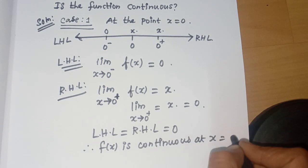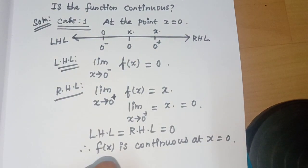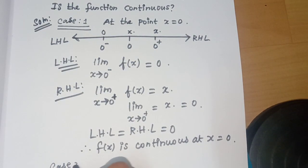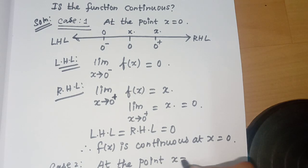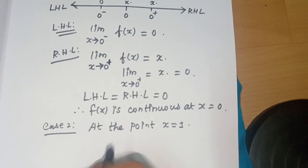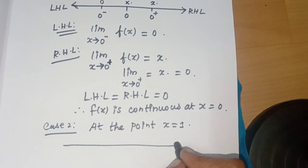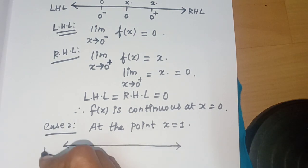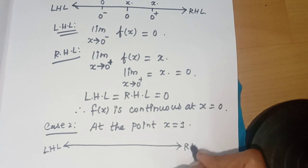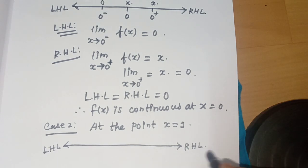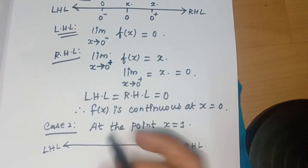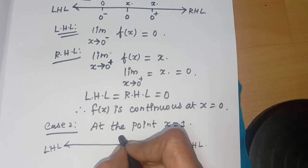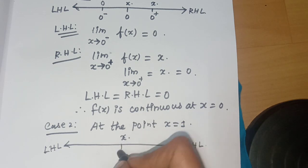Next, Case 2: at the point x = 1. Draw a number line with 1 as the midpoint. On the left side is LHL, on the right side is RHL. At x = 1, the function value from the left uses f(x) = x, giving f(1) = 1.